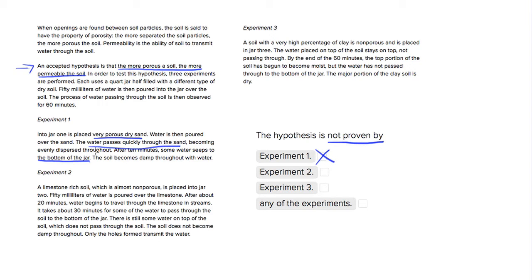Choice experiment 2. In experiment 2, we have an almost non-porous soil, and we have water poured over the limestone. We see that the water travels through the limestone in streams. There's some water that's still on the top of the soil that doesn't pass through. There are holes for it, but some of it does go to the bottom of the jar. So it's just really unevenly dispersed.